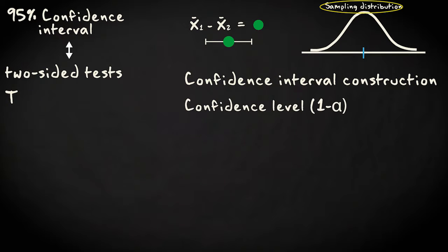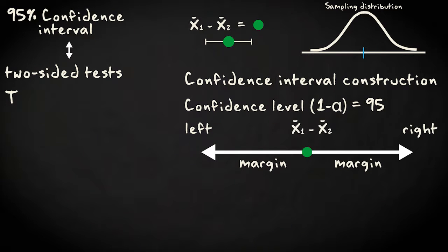Confidence intervals are based on the sampling distribution. We set the confidence level, say at 95%, and determine the margin left and right of the sample statistic.